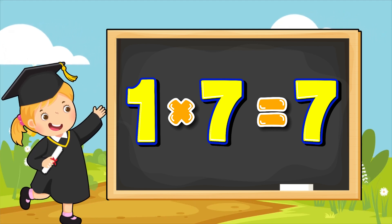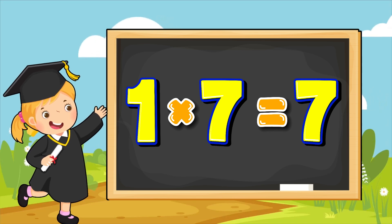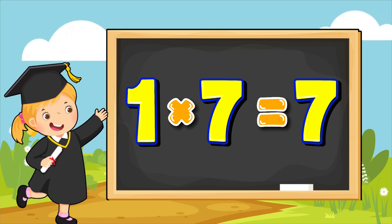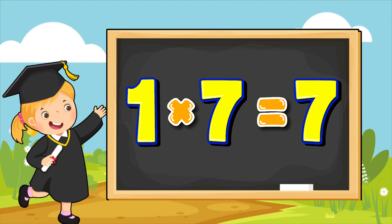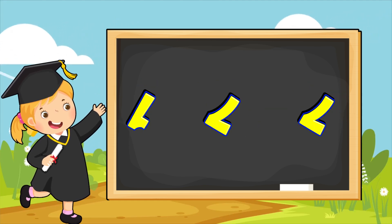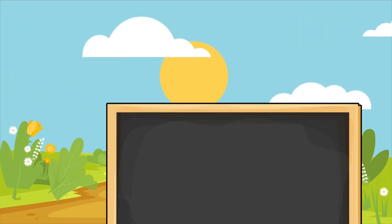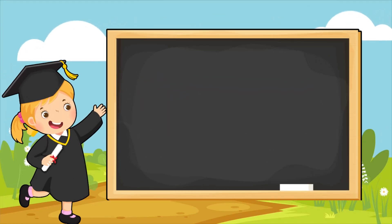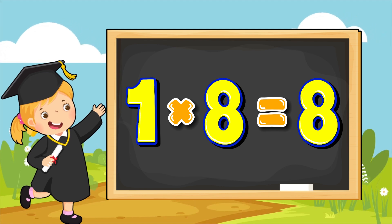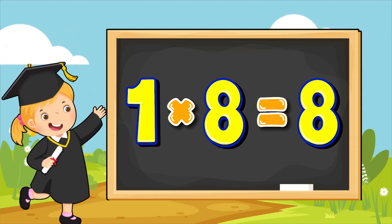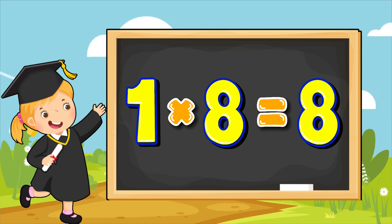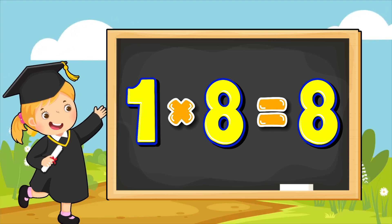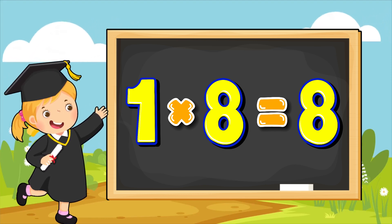One multiplied by seven equals to seven. Repeat after me. One multiplied by seven equals to seven. One multiplied by eight equals to eight. One multiplied by eight equals to eight.